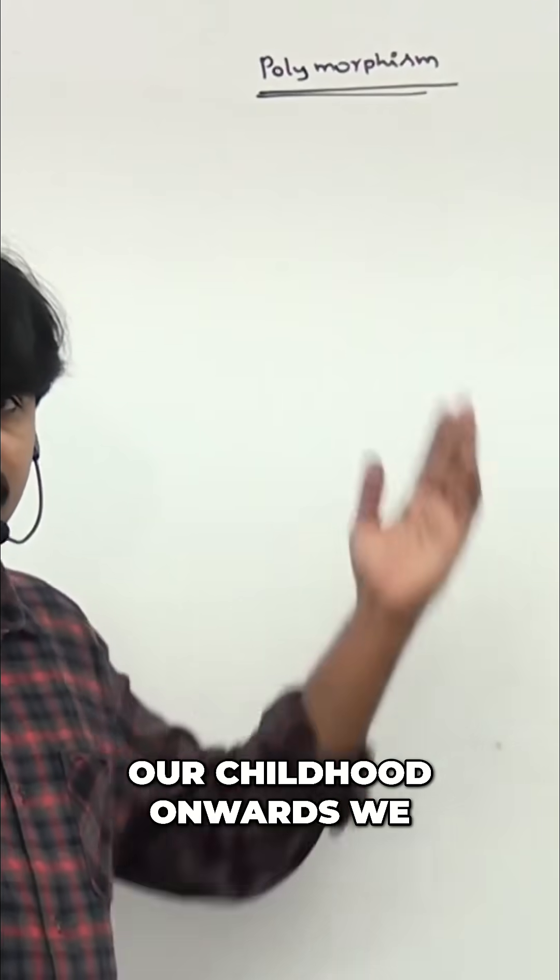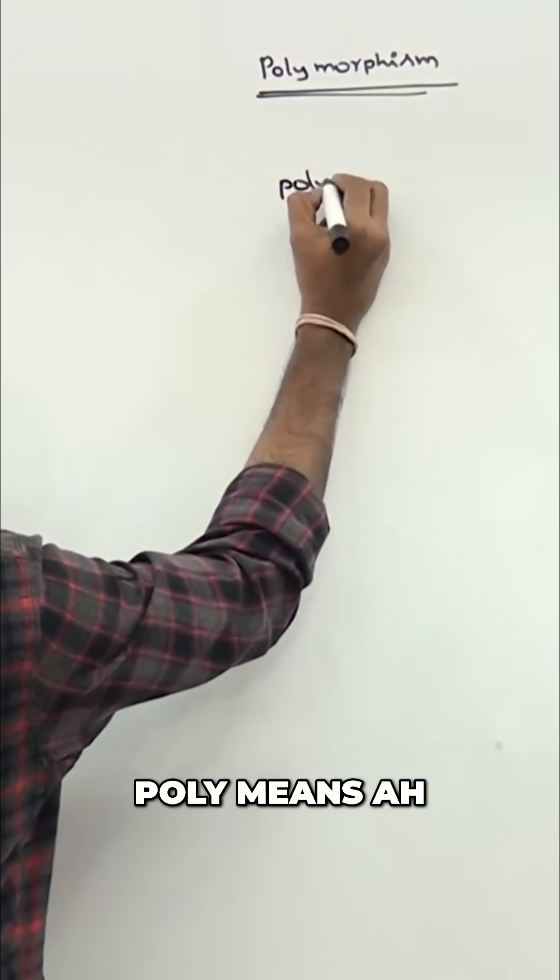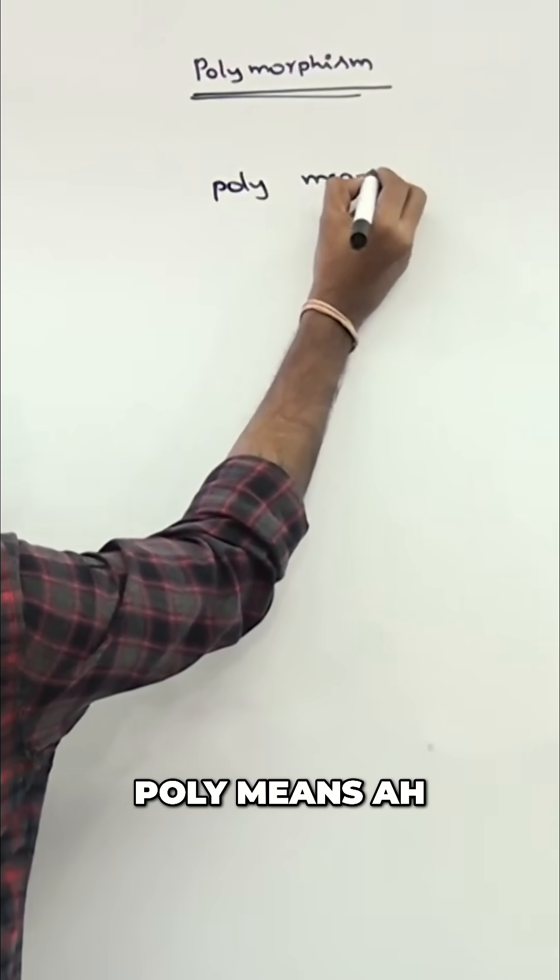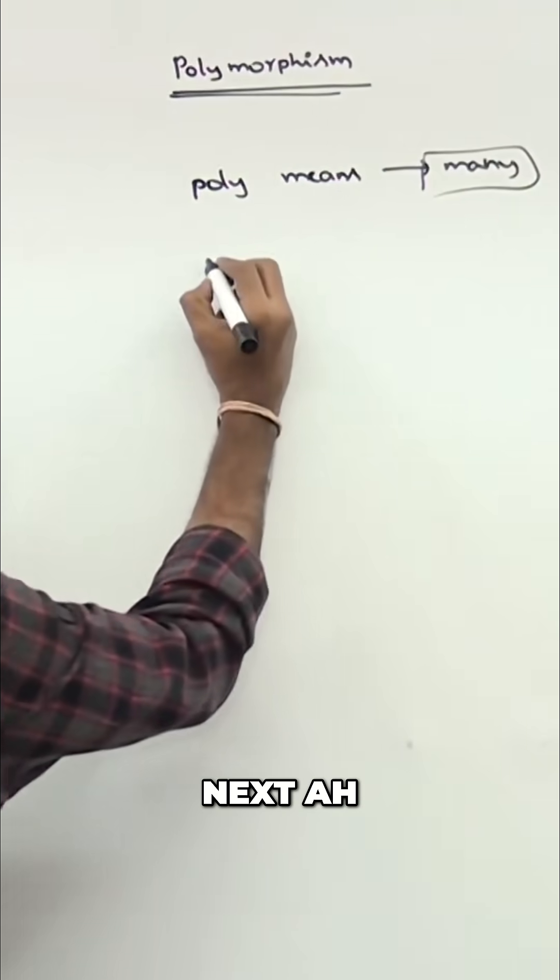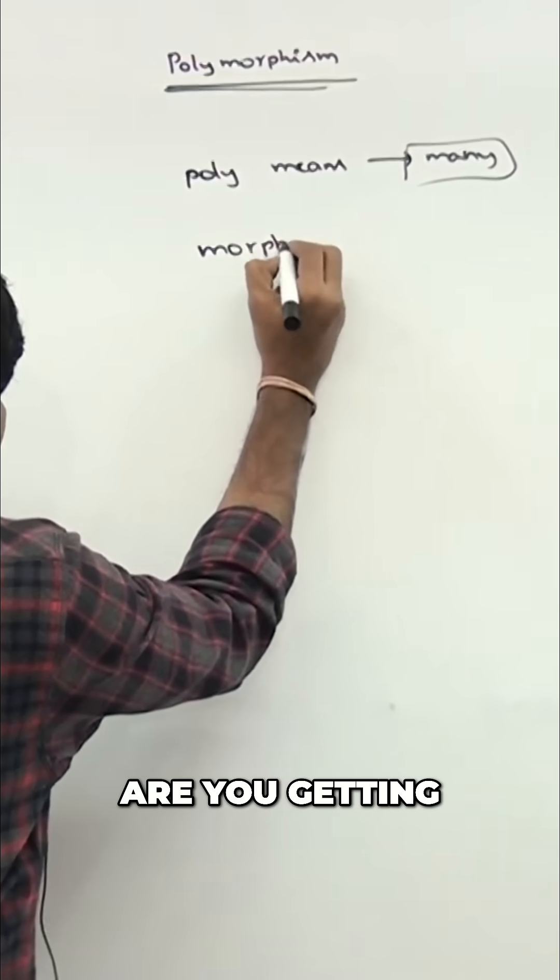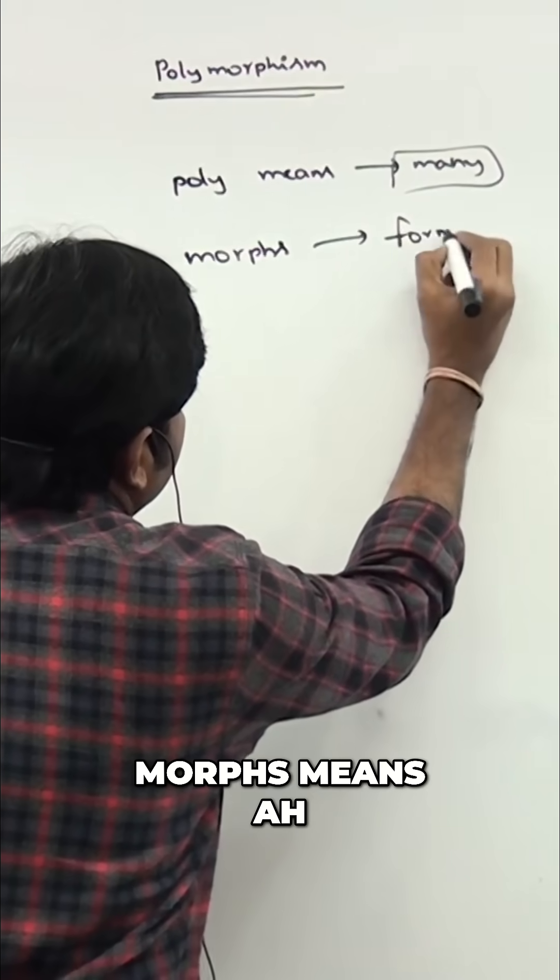From our childhood onwards we are already aware of this. Poly means many - are you getting it? Poly means many. Next, morphs - are you getting it? Morphs means forms.